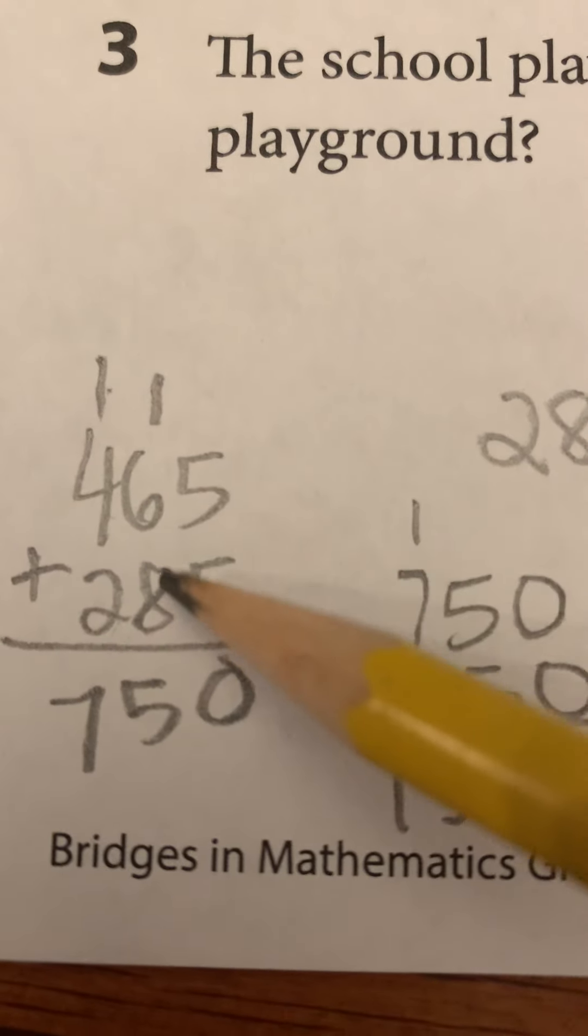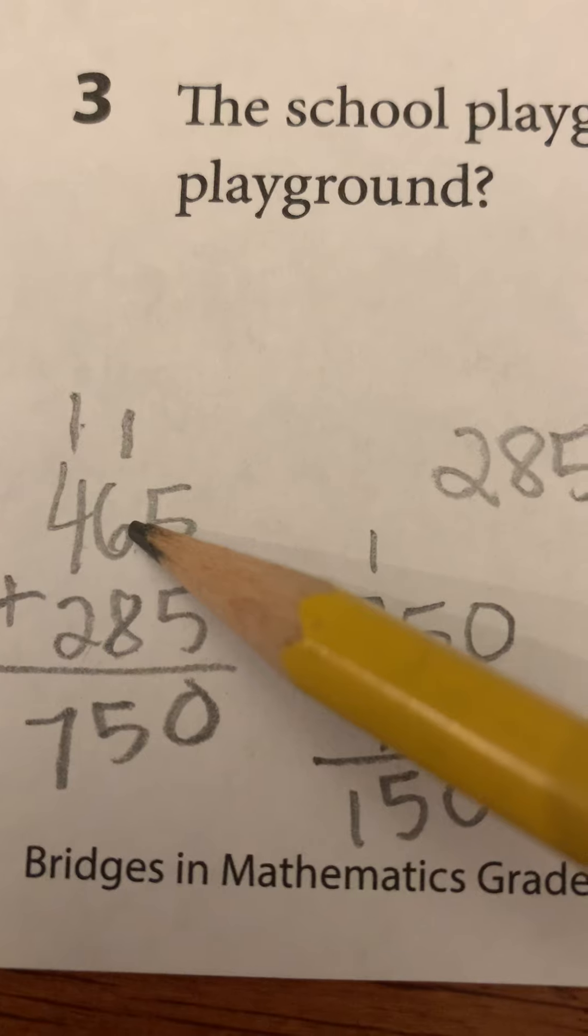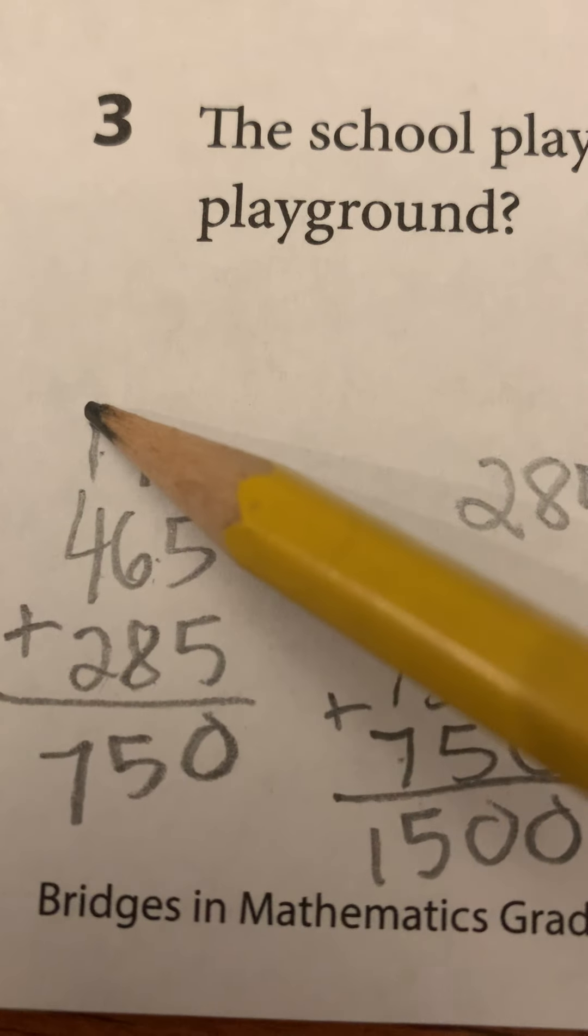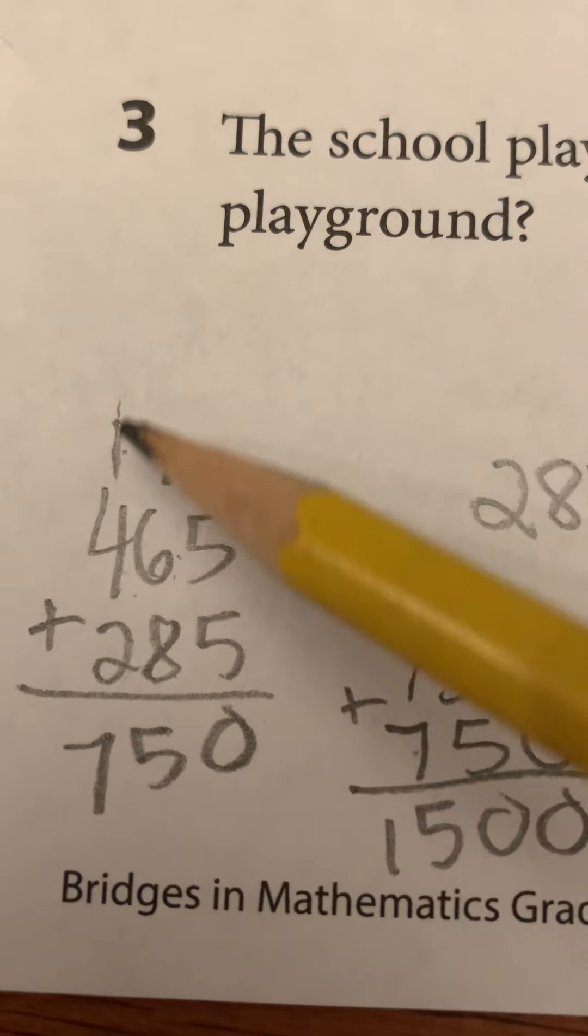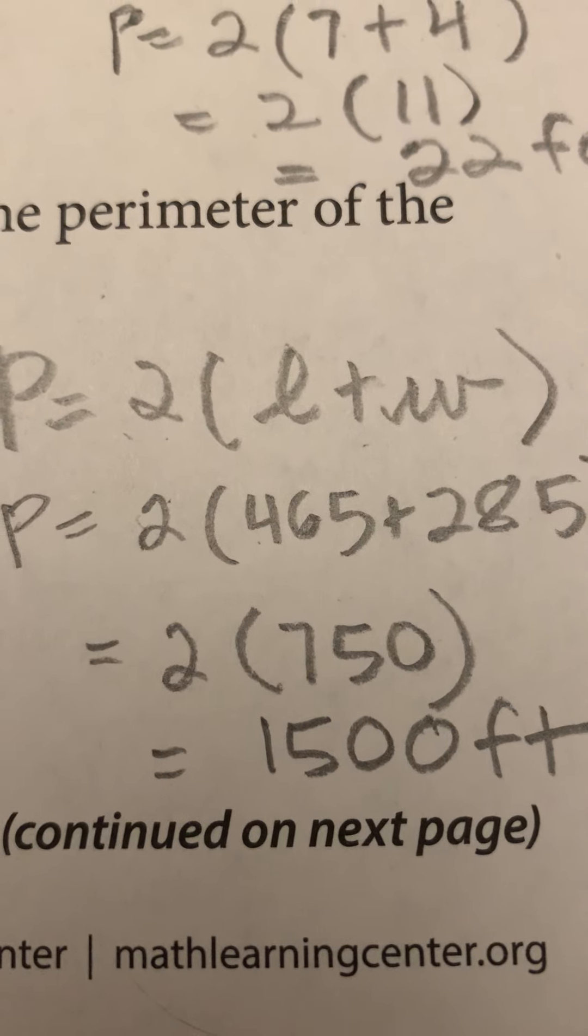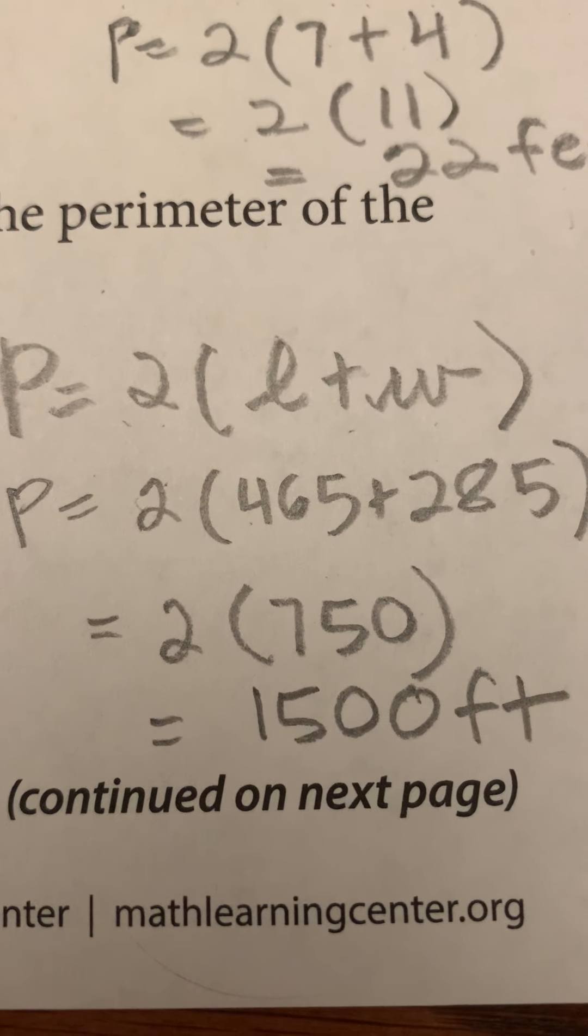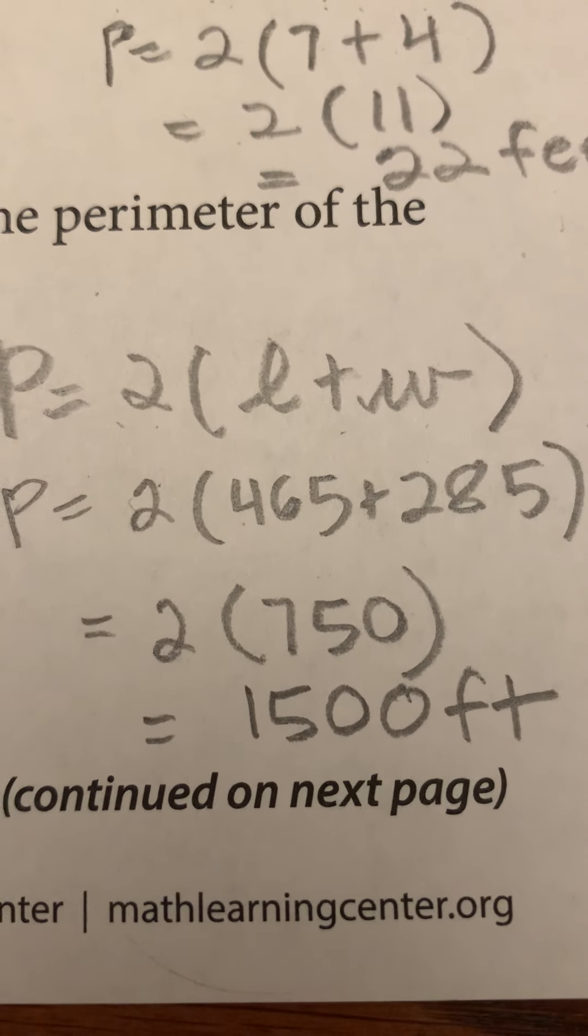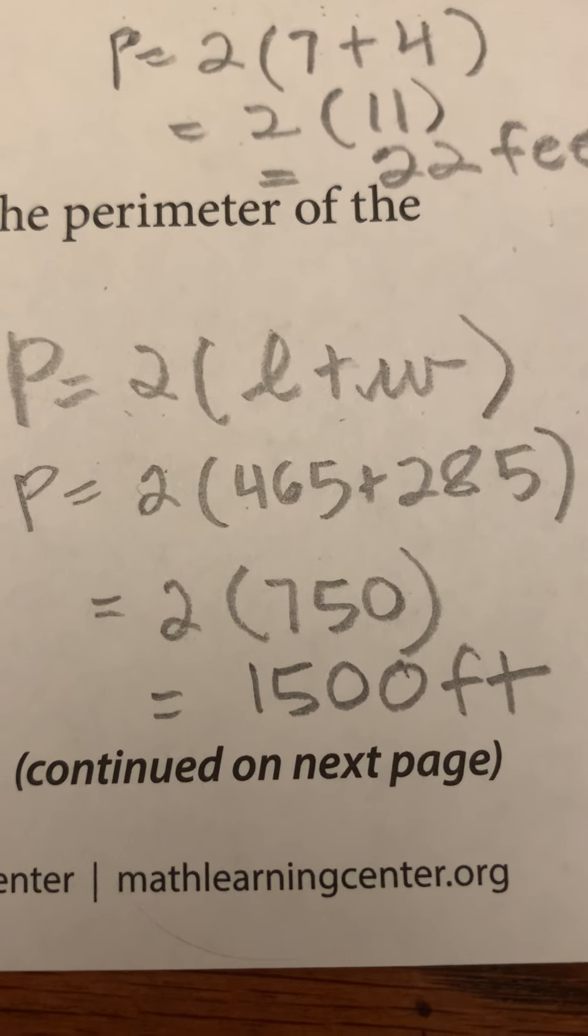Five and five is 10. Carry the 10. Six and four is 14. 15 tens. Carry the 100. 400, 500, 600, 700, 750. And then I take the 750 and times it by two. You might be able to do 700 double is 1400. 50 double is 100. 1400 plus another hundred is 1500.